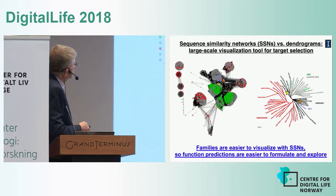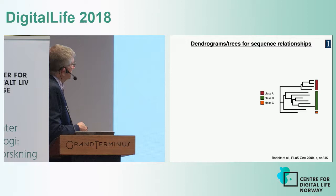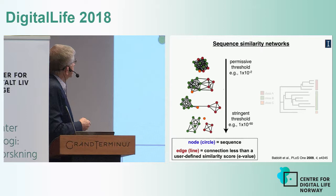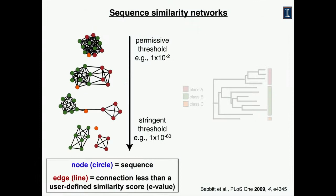How are phylogenetic trees constructed? These use multiple sequence alignments for all of the sequences you want to put into the tree. In contrast, in a sequence similarity network there are circles or nodes, each one representing a protein sequence. The nodes are connected by lines or edges that quantitate the similarity between the sequences. We use an alignment score related to the BLAST e-value to connect the nodes.